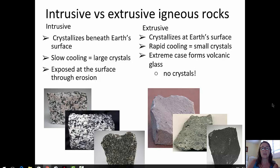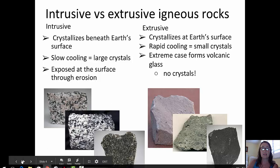Extrusive igneous rocks, on the other hand, crystallize at earth's surface. They cool rapidly and thus their crystals are smaller than intrusive igneous rocks. The extreme case forms volcanic glass, and that is when cooling is so rapid that crystals actually don't have time to form. So those extrusive igneous rocks are glassy and they do not have crystals.